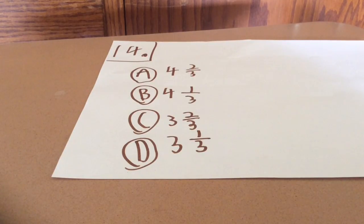So the answers are: four two-thirds, four one-third, three two-thirds, and three one-third miles.